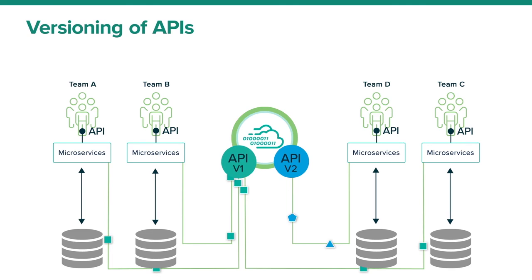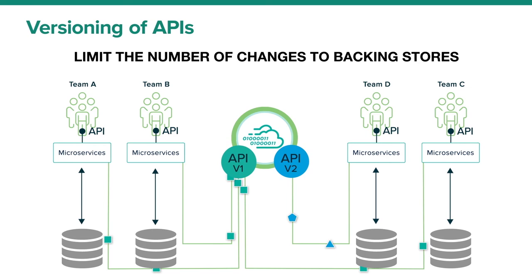In our example, two versions of APIs are deployed in parallel — one version handles name as a single field while the other handles name in two separate fields for first name and last name. Data transformation code within the microservice can handle this change without any change to the backing store schema. This adds flexibility where teams can receive their desired view of the data without disrupting other teams. Data APIs can also provide isolation from changes to the backing store — a version of the API that projects the old schema can be retained for backward compatibility, allowing data access patterns to evolve through gradual change.